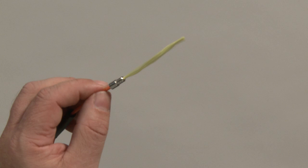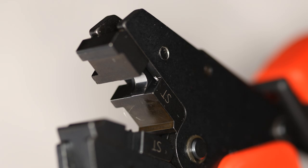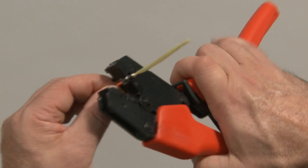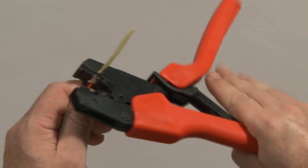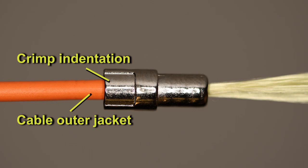Crimp the anchor by positioning it in the crimp tool so the end of the anchor aligns with the edge of the crimp die. Squeeze the handles of the crimp tool until you hear a click. This will leave a depression on the cable anchor where it is crimped to the cable jacket.